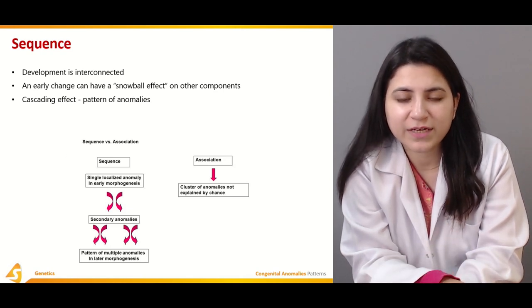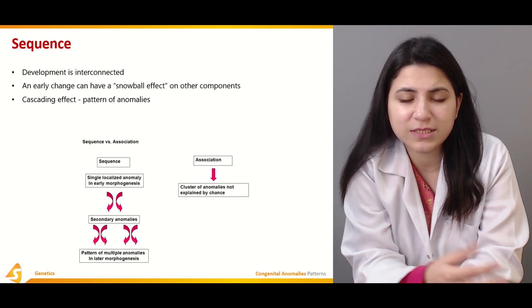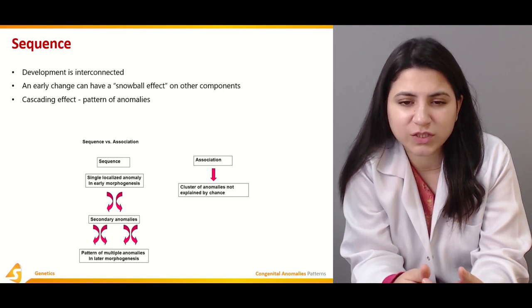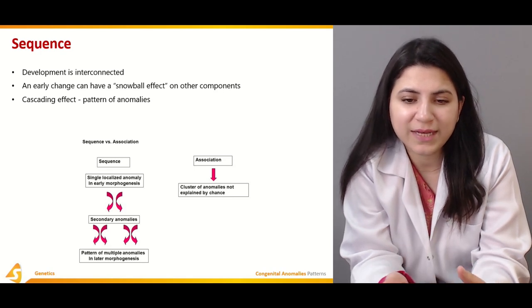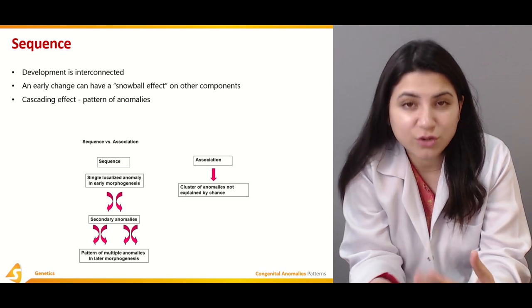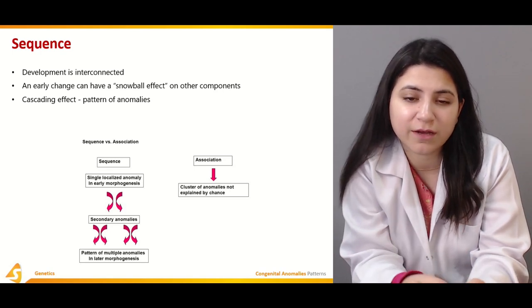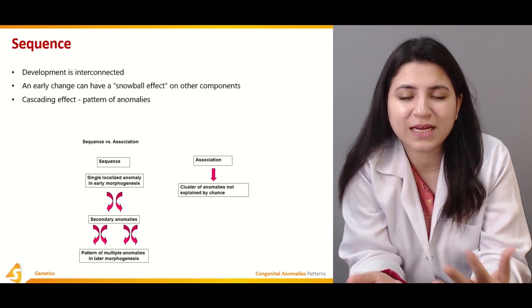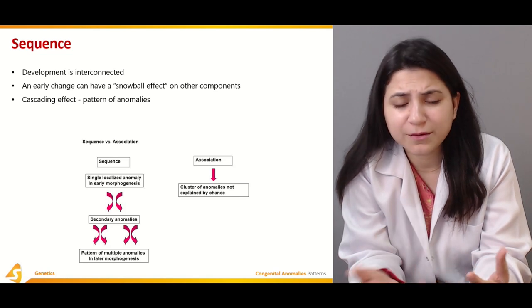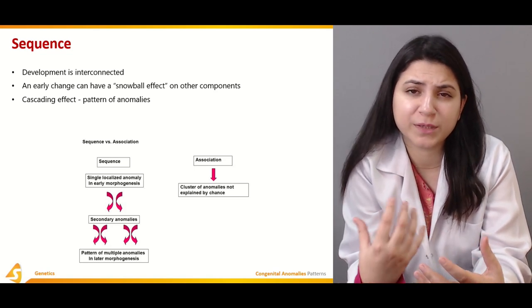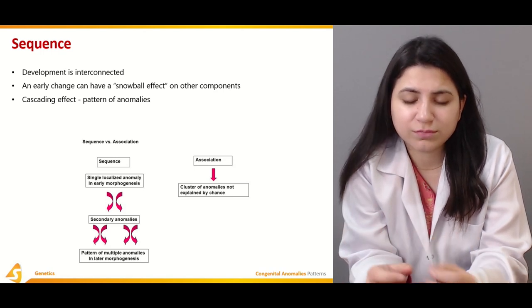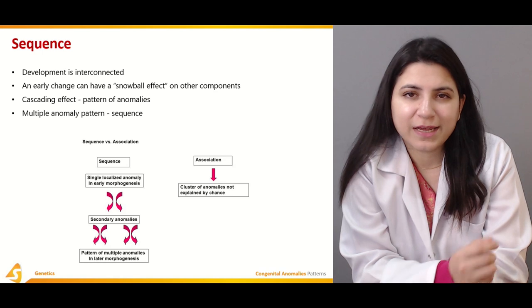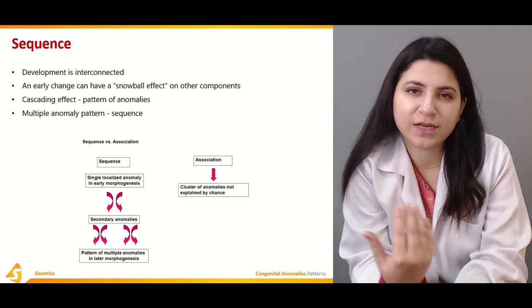There is a cascading effect and a pattern of anomalies that can be seen in a sequence. Comparing sequence and association: in a sequence, there is a single localized anomaly in early morphogenesis that leads to secondary and tertiary anomalies. In association, there is a cluster of anomalies that is not explained in a particular fashion or order, and you cannot determine the root cause. That is how we differentiate sequences from associations, and associations from syndromes.